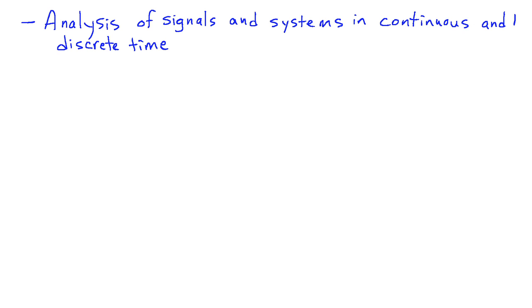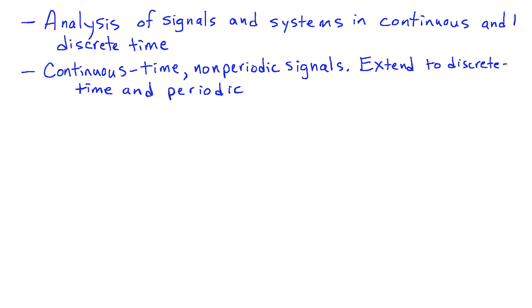The Fourier transform is a widely used tool in all of science and engineering. We're going to look at it specifically for signal processing. The Fourier transform is used to analyze signals and systems in both continuous and discrete time. It's primarily derived for the case of continuous-time non-periodic signals. However, if we use things like impulses, we can extend the Fourier transform to discrete-time signals and to periodic signals.